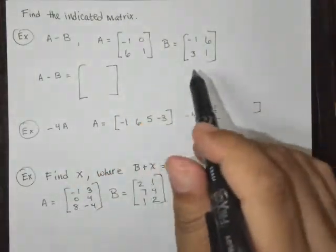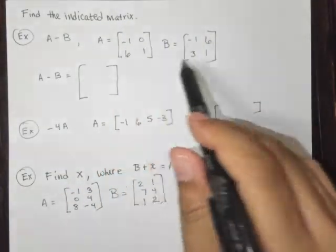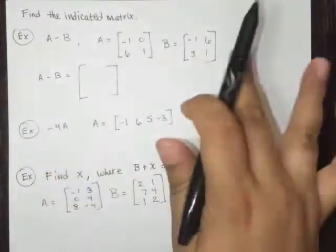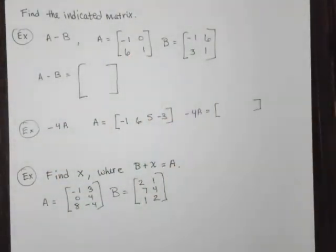In this case, these are both square matrices, meaning same number of rows, same number of columns. So we're good. But in general, to add and subtract matrices, they must be the same size, same dimensions.